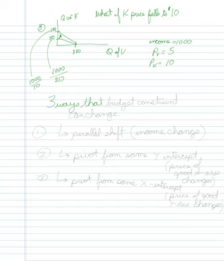So there have been basically three ways that the budget constraint can change. Number one: you can have a parallel shift. That would be whenever the income is changing, and I drew it as if income were increasing, but I could have also drawn it as if income was decreasing.